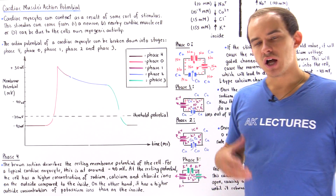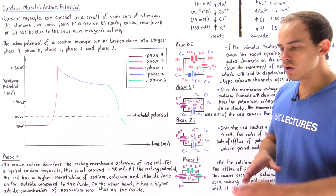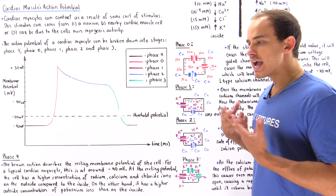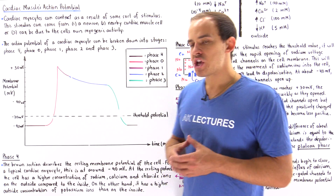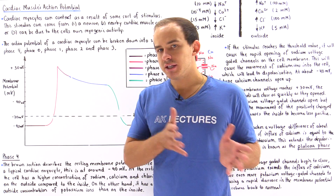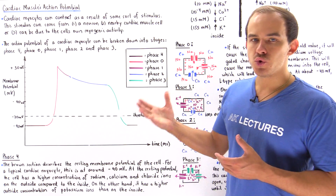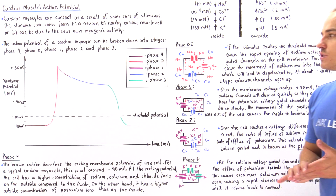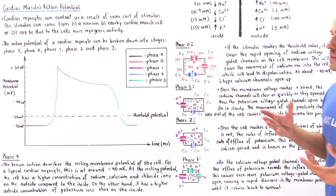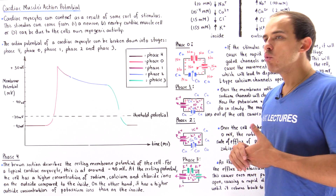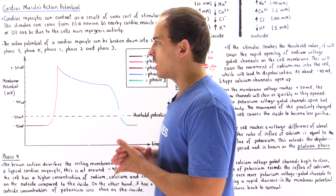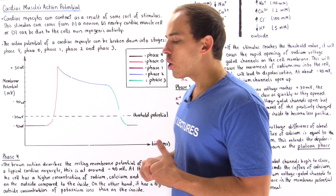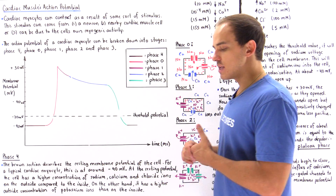In our discussion on cardiac muscle cells, we said that cardiac muscle cells have a slightly different action potential than do neurons. So this is what we're going to focus on in this lecture — the generation of an action potential in cardiac muscle cells.